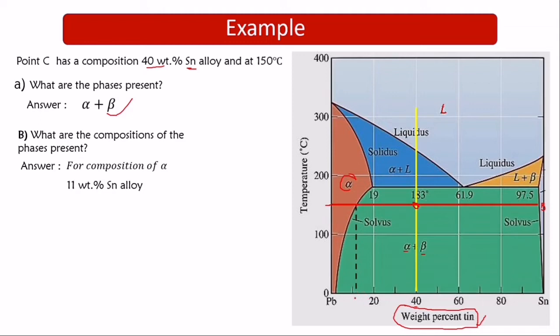The composition of alpha is 11 weight percent tin. The same approach applies for beta: where the temperature hits the beta boundary, trace down to get the composition of the beta phase, which is 97 weight percent tin. You need both temperature and bulk composition to determine the number of phases, as well as the composition of each phase.